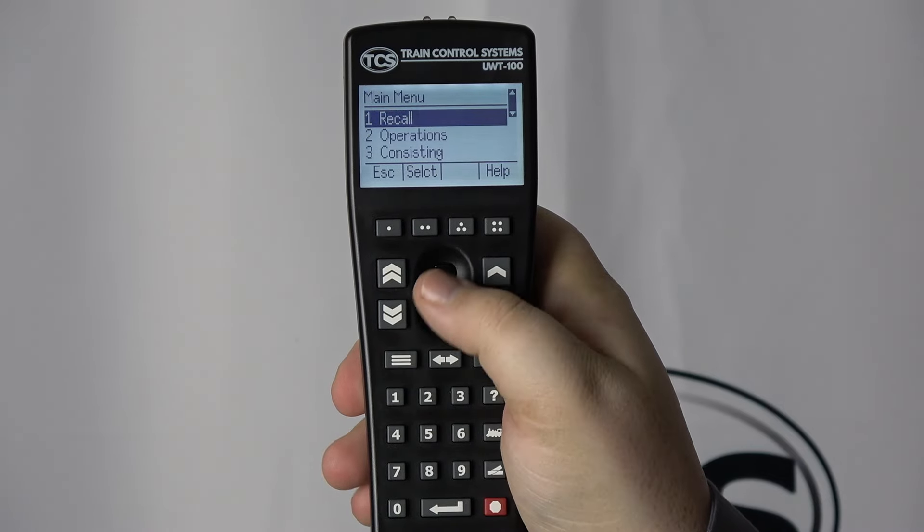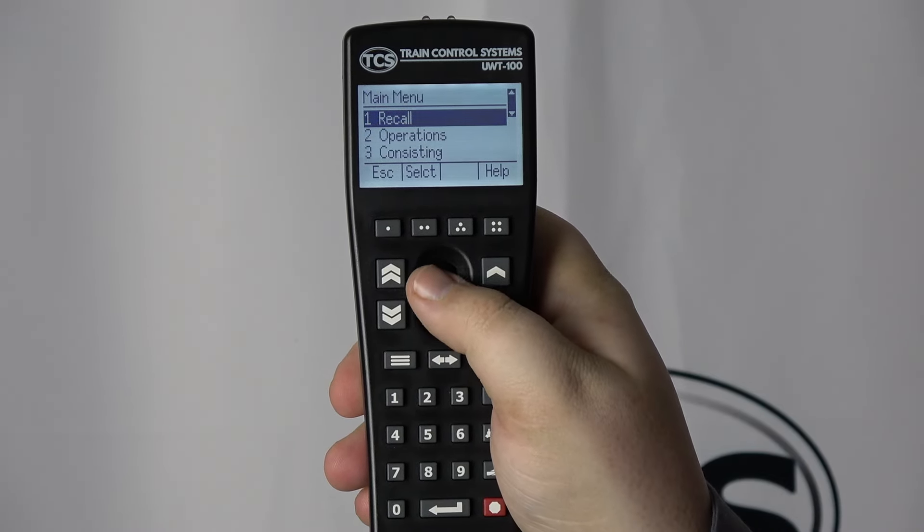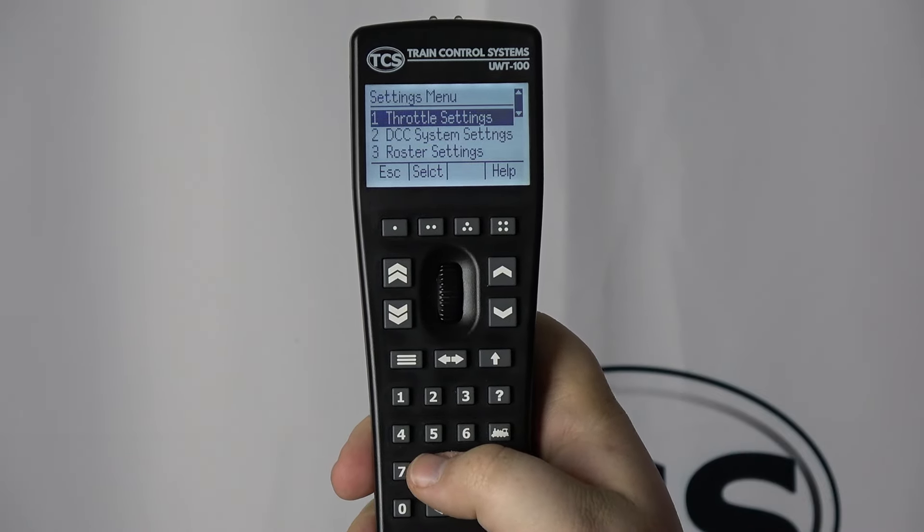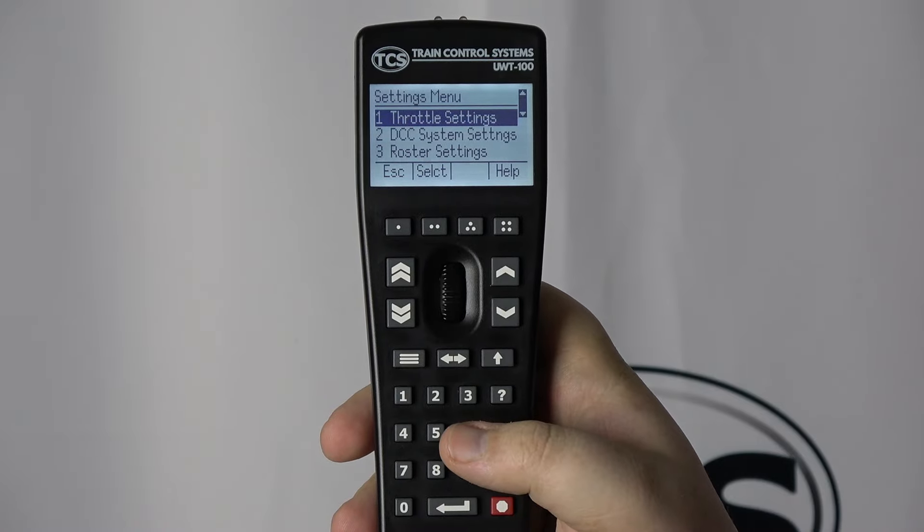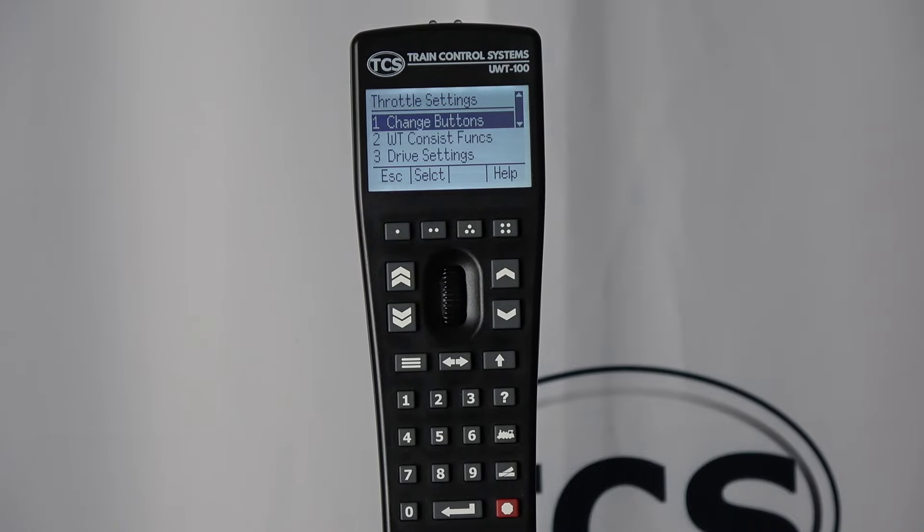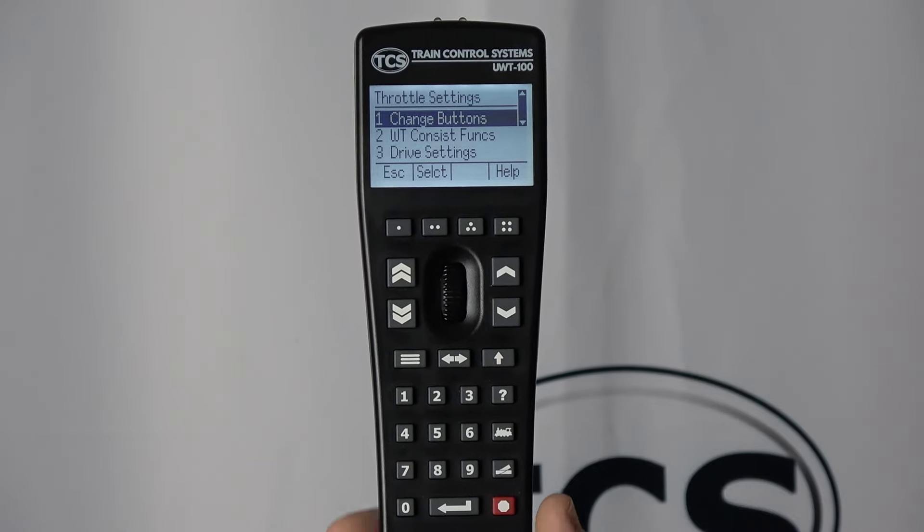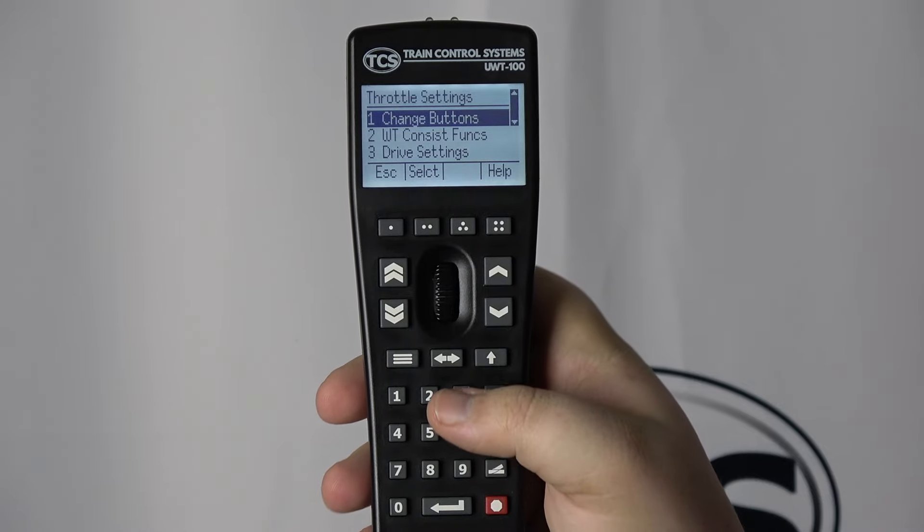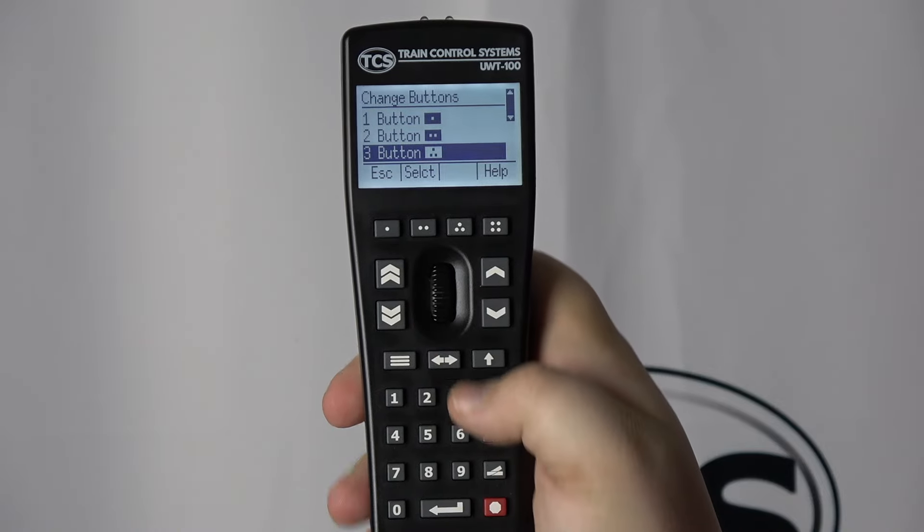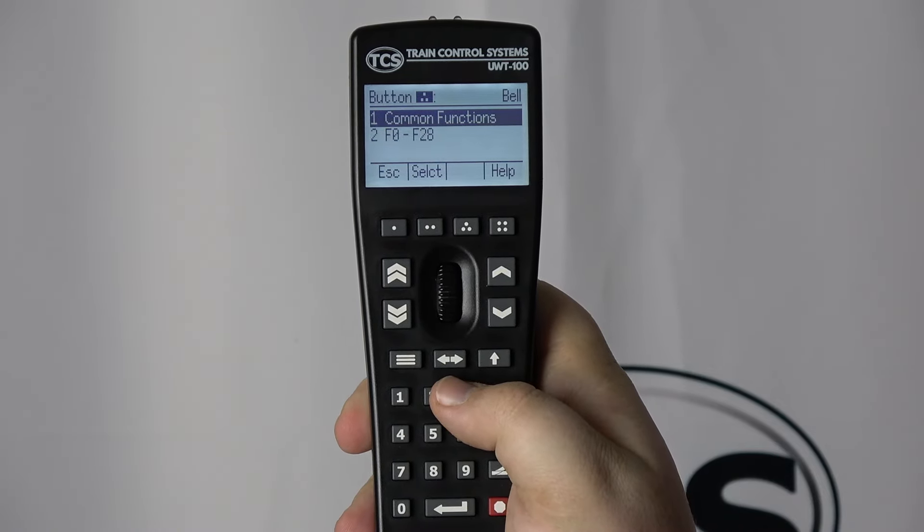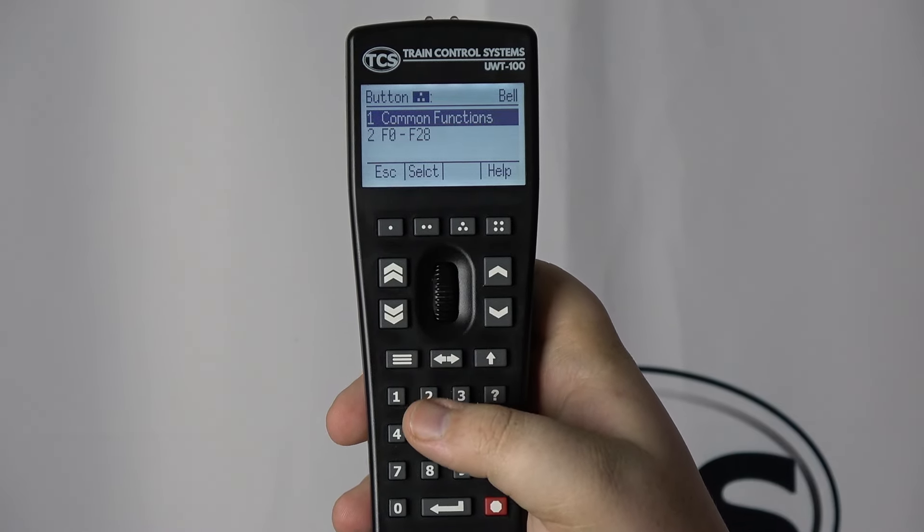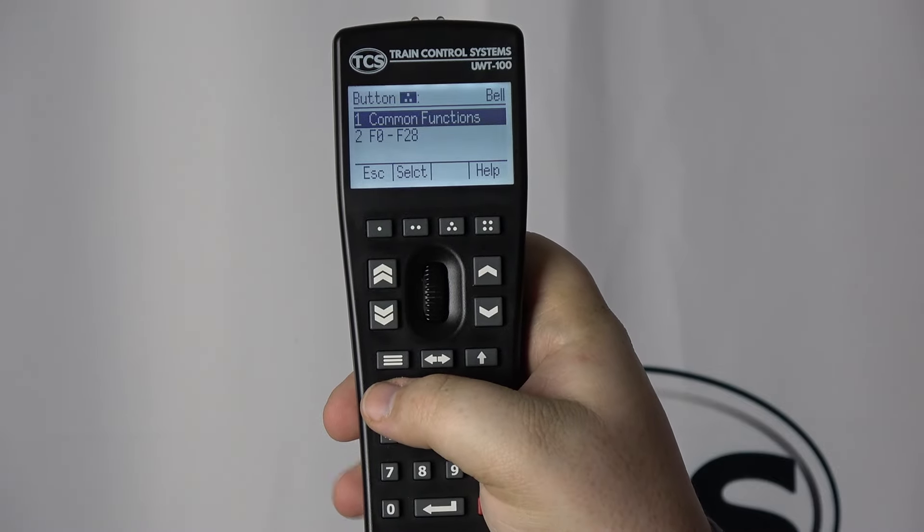First, press the menu button. Then scroll to settings or press button 8. Next, select throttle settings or press button 1. In throttle settings, select change buttons or press button 1. Then scroll to the button with three dots or press button 3. Select common functions or press button 1 and scroll down to dual direction and select it.